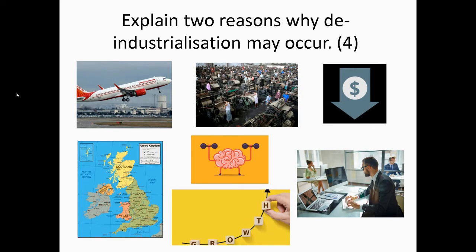Welcome back. The first point is all about outsourcing — industry being sent to developing or emerging countries. You can see this through trade, with industry in countries like India and China. The reason for that is your second mark, your explanation: due to cheaper manufacturing costs and cheaper pay for workers, meaning companies can make more profit.